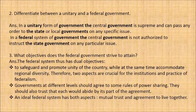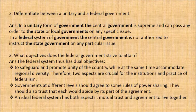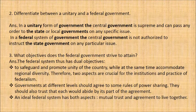Second question: Differentiate between a unitary and a federal government. In a unitary form of government, the central government is supreme and can pass any order to the state or local government on any specific issue — example, United Kingdom. In a federal system of government, the central government is not authorized to instruct the state government on any particular issue because the central and state government enjoy their independent powers — example, the United States of America. Next question: What objectives does the federal government strive to attain? It has a dual objective — to maintain unity as well as to accommodate regional diversity.